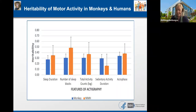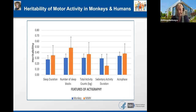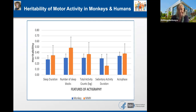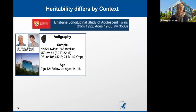We know that sleep, activity, and circadian rhythms are heritable — meaning they are partly explained by genetic factors. In the monkey sample using half-siblings, and in our human samples using familial associations, we see that both monkeys and humans show about 30% heritability — about 30% of the variance can be explained by genetic similarity across these domains of motor activity and related behaviors.